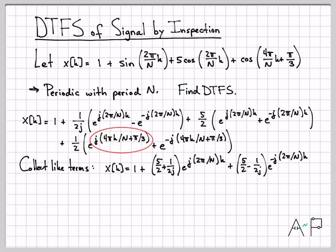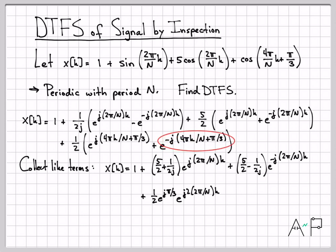For the e^(j(4πk/N + π/3)) term, we split it into e^(j4πk/N) times e^(jπ/3). This gives a complex exponential at twice the fundamental frequency — e^(j·2·(2π/N)·k) — with a coefficient of (1/2)e^(jπ/3). Similarly, e^(−j(4πk/N + π/3)) splits into e^(−j4πk/N) times e^(−jπ/3), giving e^(−j·2·(2π/N)·k) with coefficient (1/2)e^(−jπ/3).